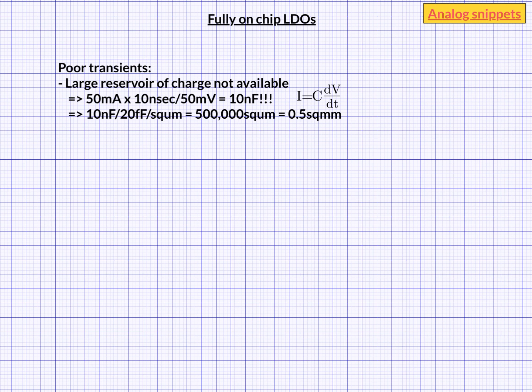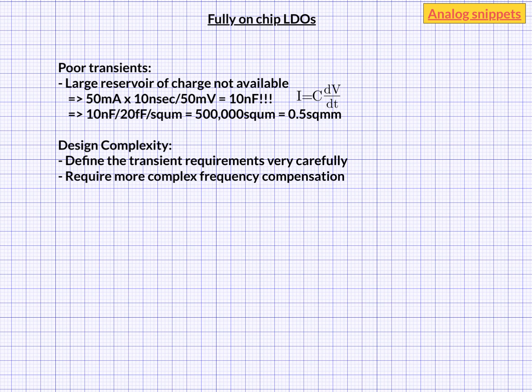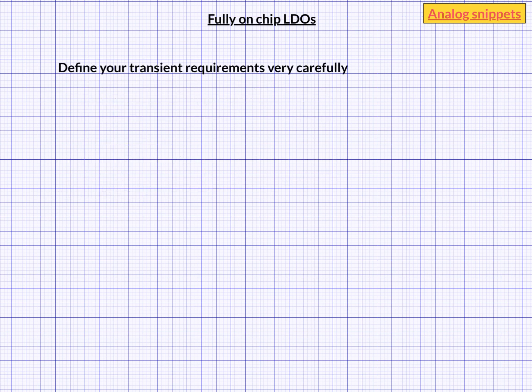So by increasing design complexity, we are essentially making up for the lack of this large capacitor at the output. You start by very carefully defining your transient requirements. Frequency compensation schemes become more complex. Feedback loops are added to sense sudden transients, and other schemes like dynamic biasing are also required. Now let's go into these points in more detail. When we have the luxury of an off-chip capacitor, we put it through very extreme transient demands — for example, switching between 0 to max current with nanosecond rise times.